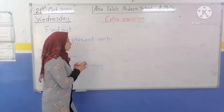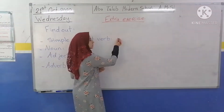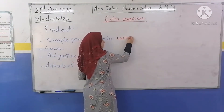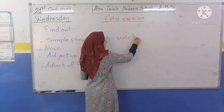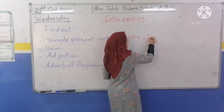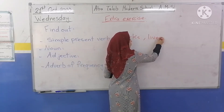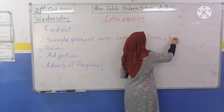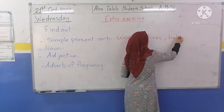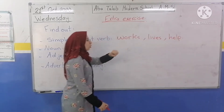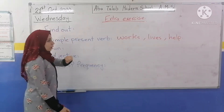Find — استخرج — simple present verbs — فعل مضارع. For example: works, lives, help. Write all of these verbs.